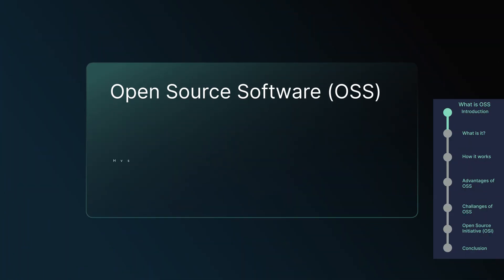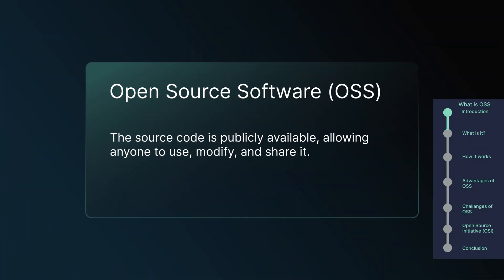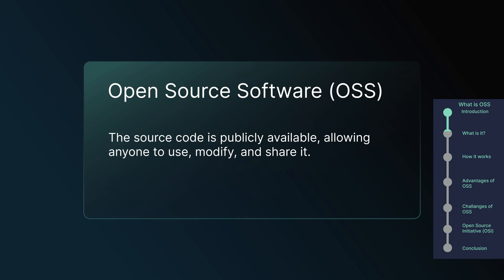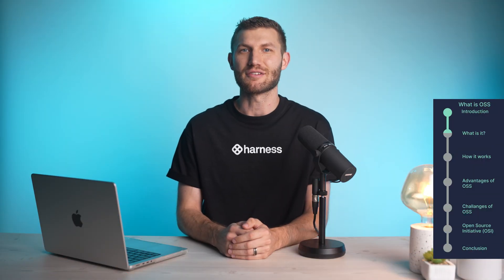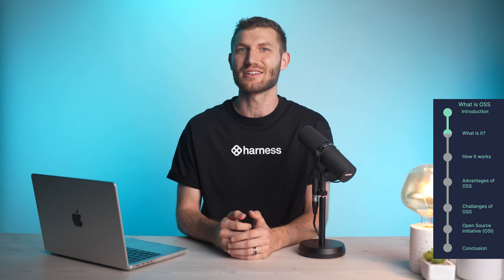Open Source Software means the source code is publicly available, allowing anyone to use, modify, and share it. This transparency fosters collaboration and continuous improvement by a global community of developers.